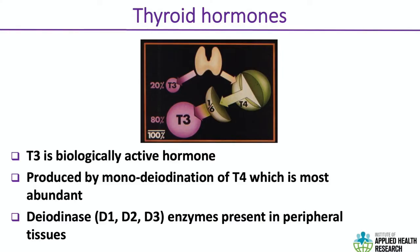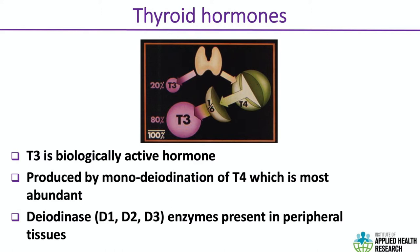In people with an intact thyroid gland, the gland mainly produces T4, even though T3 is the active thyroid hormone. In our peripheral tissues, enzymes activate the inactive T4 to T3. About 20% of our T3 is directly produced by the thyroid gland. There are different types of deiodinase enzymes — some are activating, some inactivating. You get from T4 to T3 by removing one iodine residue.